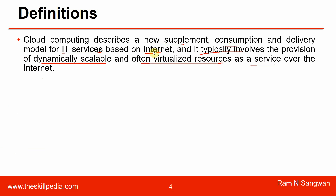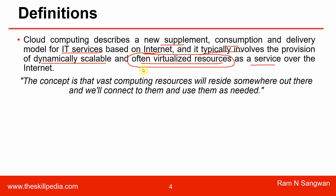The term 'often virtualized' is notable because OCI — Oracle Cloud Infrastructure — is the only cloud infrastructure that also offers bare metal servers, not only virtualized resources. But generally when we say cloud, we offer virtualized services and resources as a service over the internet. The concept is that vast computing resources reside somewhere out there and we connect to them and use them as needed.